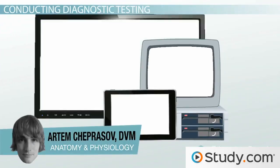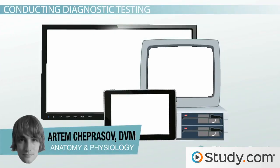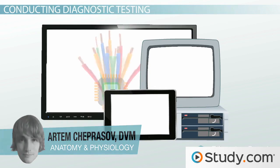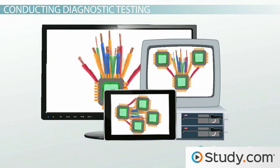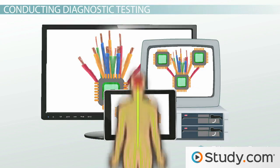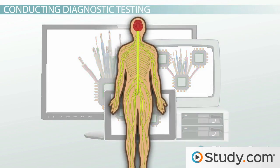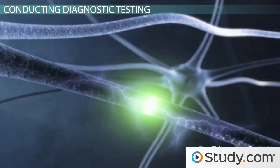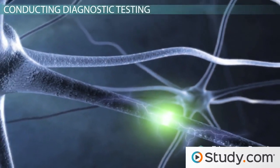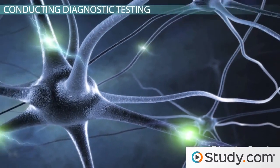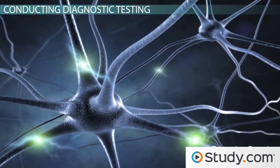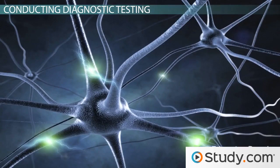The computer, tablet, or TV you are watching this lesson on is a collection of chips, wires, and circuits all sending signals to one another in order to interpret their environment and produce a response, image, or sound. This is exactly what your nervous system does as well. Your nervous system is a collection of cells, molecules, and neuronal circuits that interpret your environment and respond to it with movement and sound.